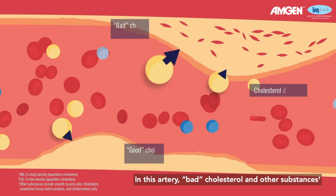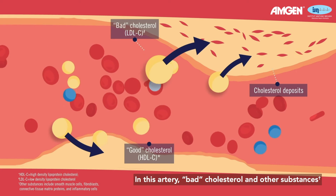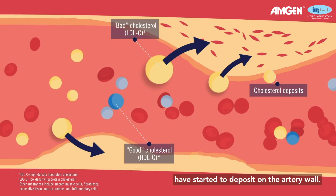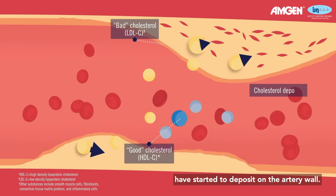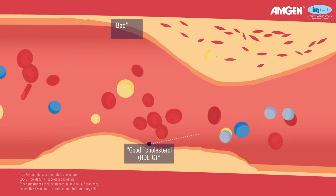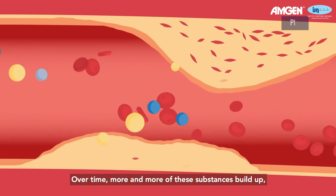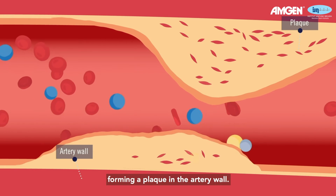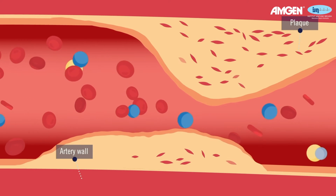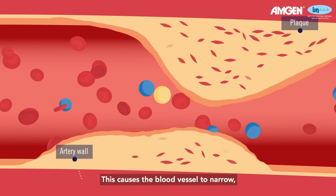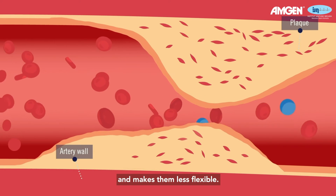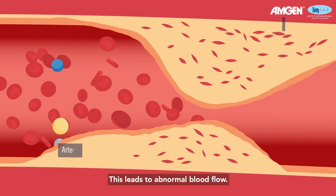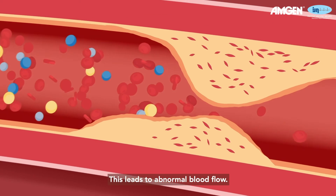In this artery, bad cholesterol and other substances have started to deposit on the artery wall. Over time, more and more of these substances build up, forming a plaque in the artery wall. This causes the blood vessel to narrow and makes them less flexible, leading to abnormal blood flow.